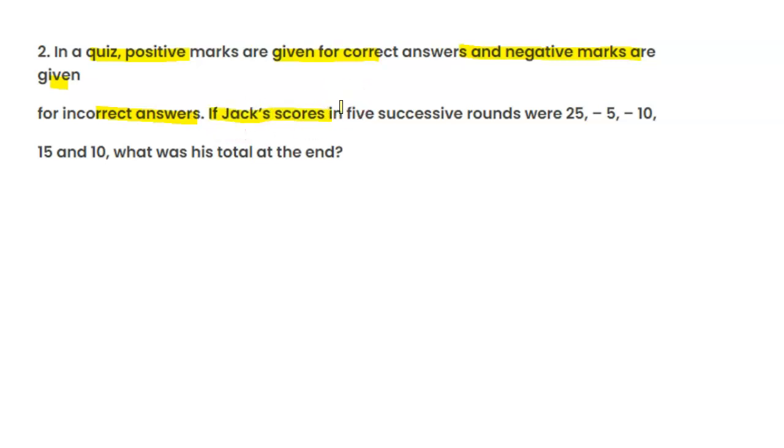positive marks are given for correct answers and negative marks are given for incorrect answers. If Jack's scores in five successive rounds were 25, -5, -10, 15 and 10, what was his total at the end?